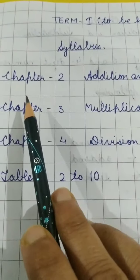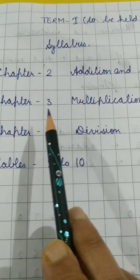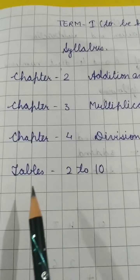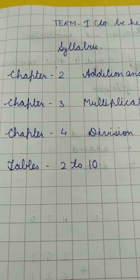Term 1, which is going to be held in the month of September, syllabus is chapter 2 addition and subtraction, chapter 3 multiplication, chapter 4 division. Along with this we have tables 2 to 10. Be thorough with this table children.